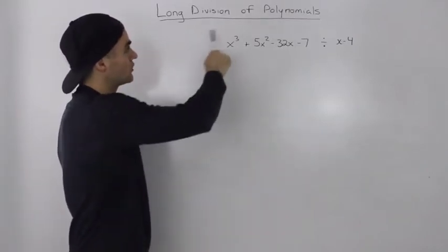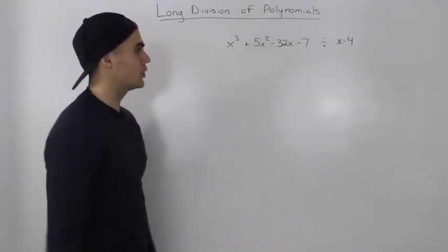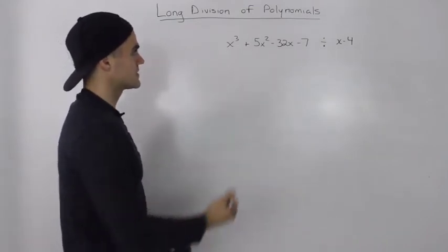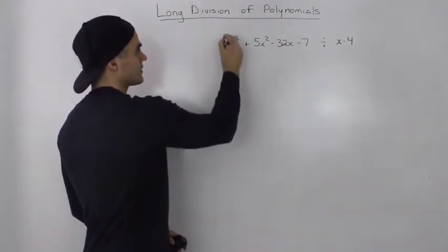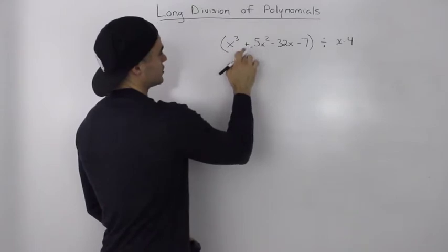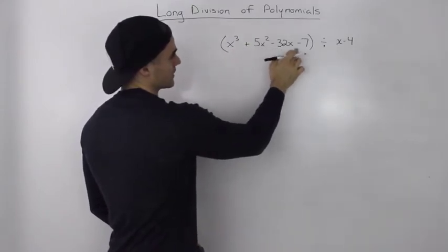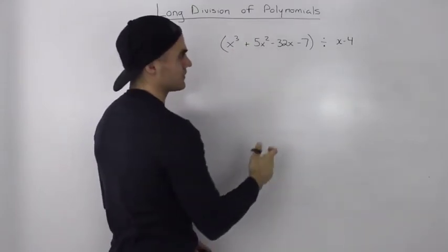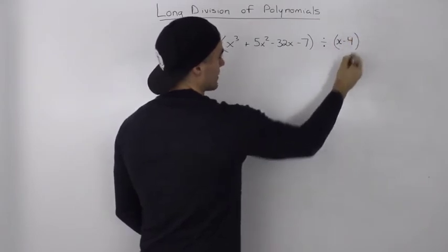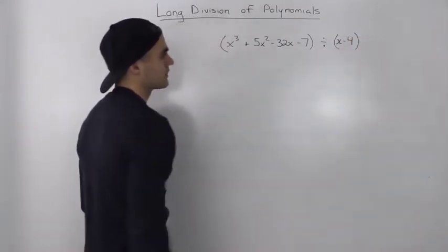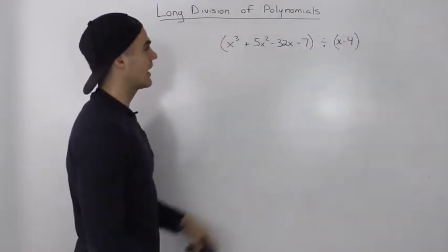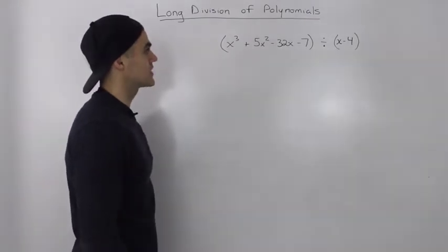Let's talk about the long division of polynomials. What I mean by this is if we take a polynomial — x cubed plus 5x squared minus 32x minus 7 — and divide it by another polynomial, x minus 4, what is the result going to be and how do we go about that process?